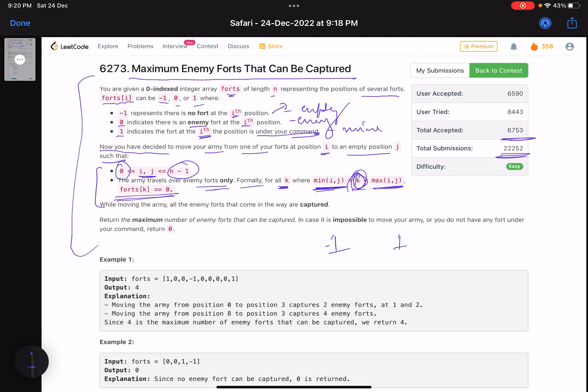What does this mean? This means that you want to move from -1 to 1 because this is my fort and this is an empty fort, and there can be enemy forts between them. So whenever I move from 1 to -1, the only forts that should come in between should be the enemy forts. It should not be like this that there is 1, -1, and there is -1 as well here. When you move from 1 to -1, only 0 should be there in the middle. That is what it is trying to say.